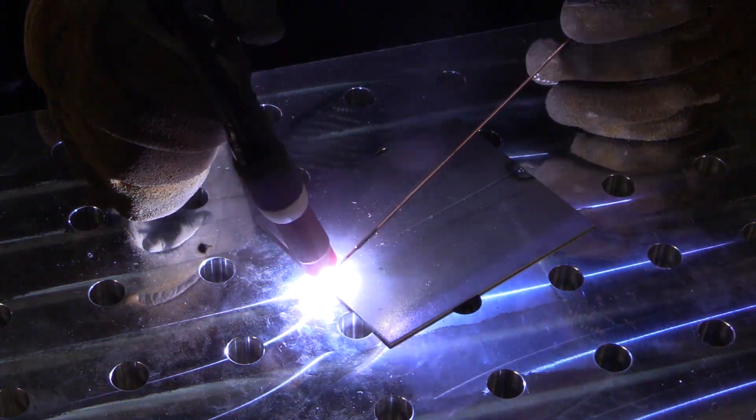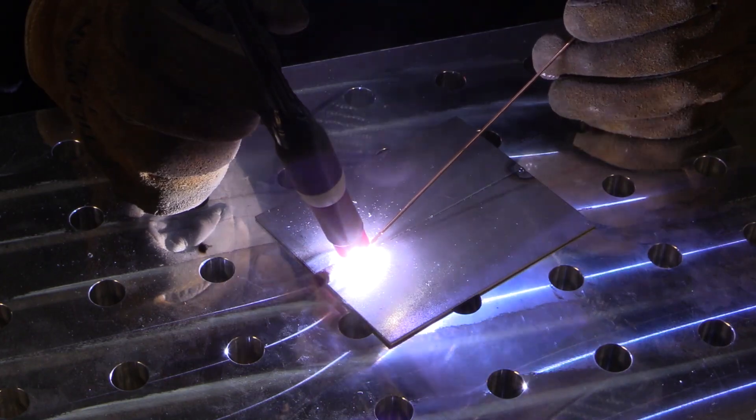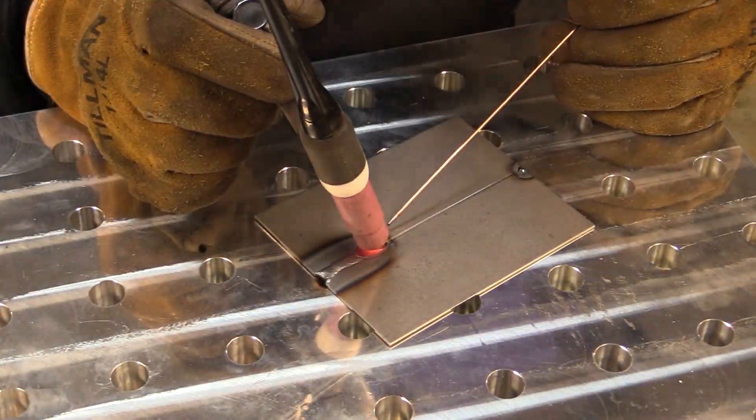TIG welding should look something like this. This is nice and smooth, no spatter, nothing coming out, a little arc shot here. Not my best necessarily, but good enough for working around a camera for sure. See how this is just nice and smooth, putting the rod at the leading edge of the puddle.